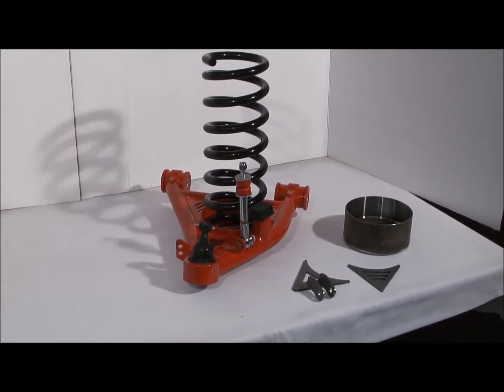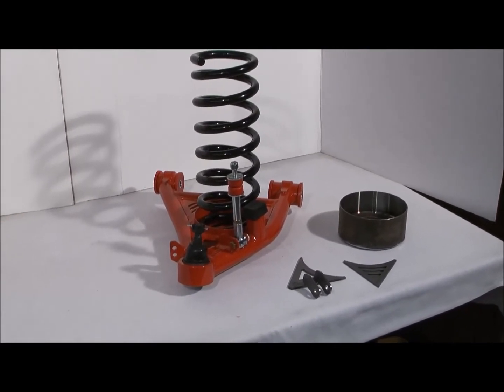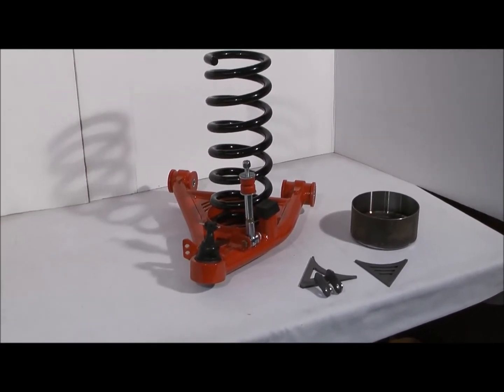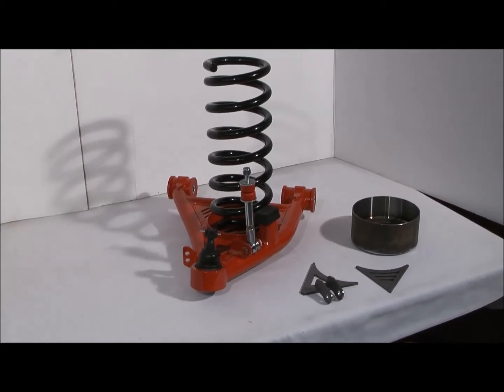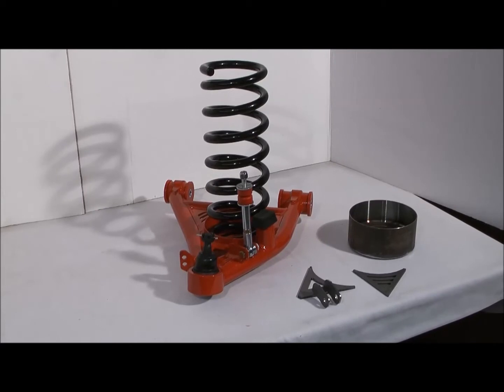These are available for the 1982 to 1992 GM F-body Camaro and Firebird, 1978 to 1987 GM G-body which is your Monte Carlo, Regal, Malibu, etc.